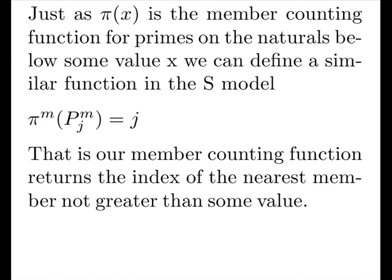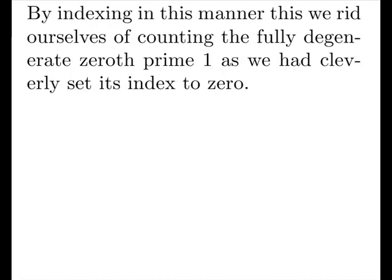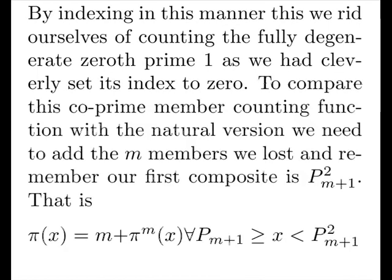Now just as π(x) is the member counting function for primes on the naturals below some value x, we can define a similar function for the S model. That is, our member counting function returns the index of the nearest member not greater than some value. By indexing in this manner, we rid ourselves of counting the fully degenerate 0th prime as we had cleverly set its index to 0. To compare this co-prime member counting function with the natural version, we need to add M members we lost, and remember that our first composite is our next prime squared.